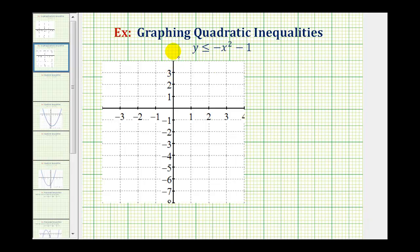Welcome back to a second example of graphing the solution to a quadratic inequality. Here we have y is less than or equal to negative x squared minus one. So we want to find the region on the coordinate plane where the coordinates of the point in the region will satisfy this inequality.